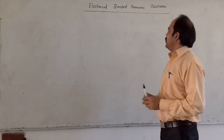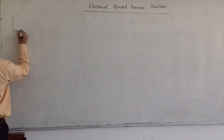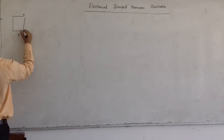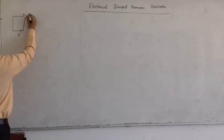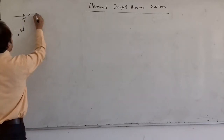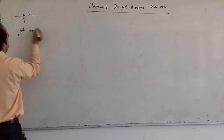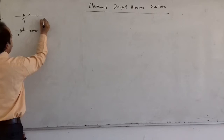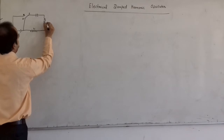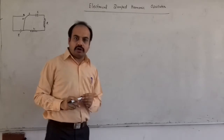Today we will discuss about the electrical damped harmonic oscillator, which consists of an EMF source E, a switch S, a capacitor of capacitance C, an inductor of inductance L, and an additional resistance R — which was not present in the electrical simple harmonic oscillator.